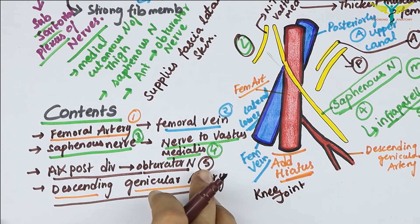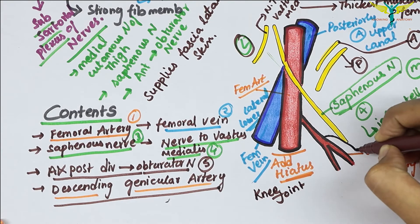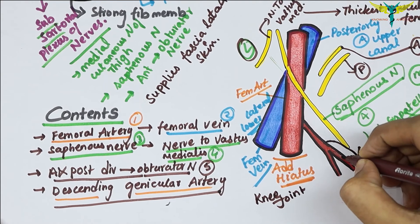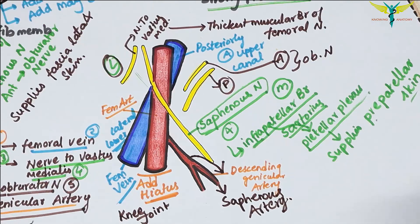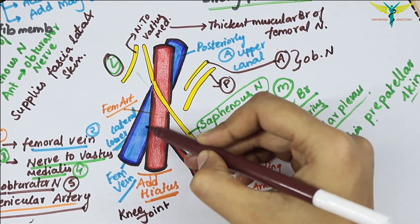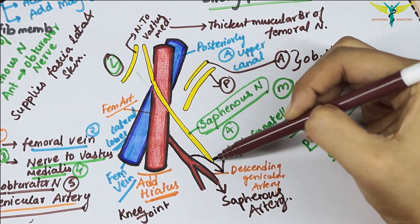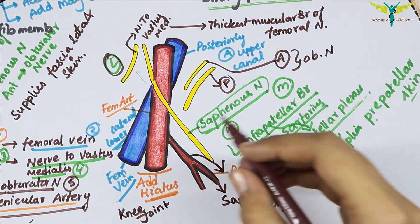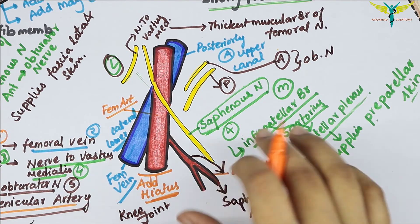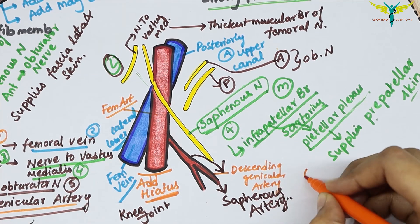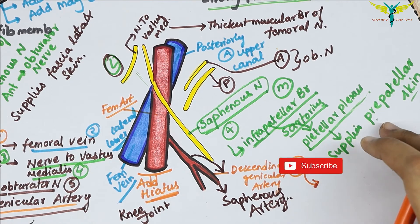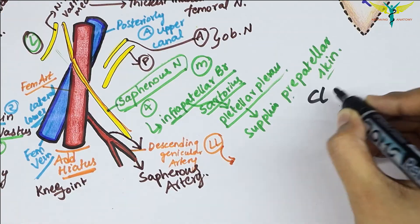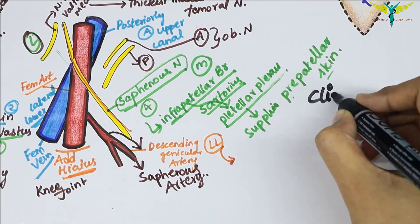The descending genicular artery, a branch of the femoral artery, gives off another branch called the saphenous artery. The spiral course of the femoral vein and saphenous nerve with respect to the femoral artery is due to the medial rotation of the lower limb during development — as the lower limb rotates medially, this spiral arrangement is established.